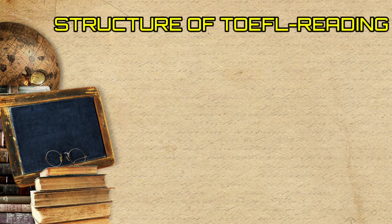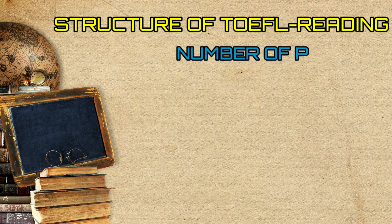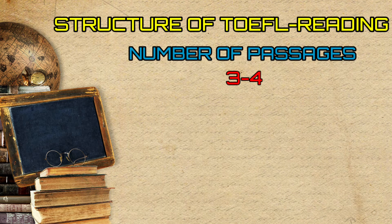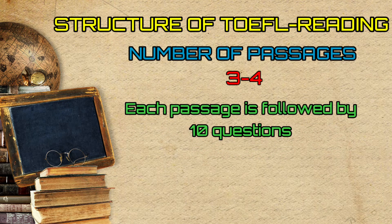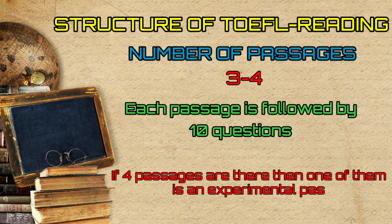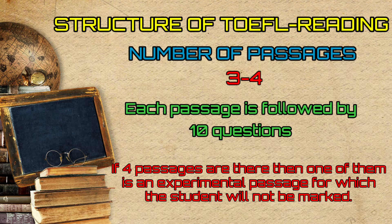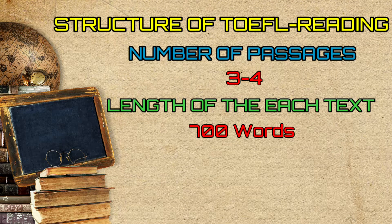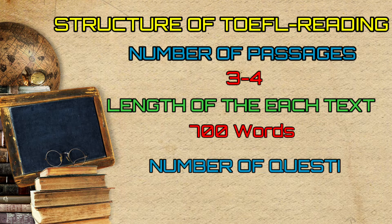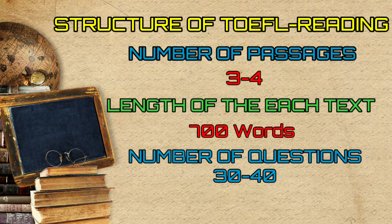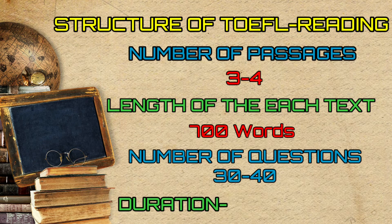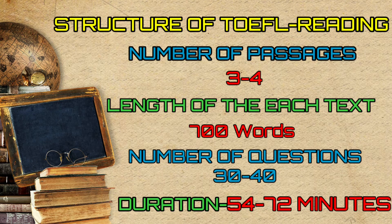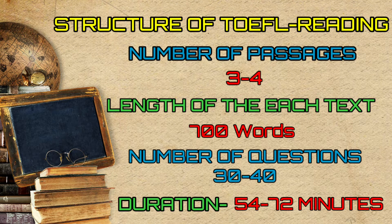Structure of TOEFL Reading section: The reading section comprises of three or four comprehension passages followed by a set of ten questions per passage. If four passages are there, then one of them is an experimental passage for which the student will not be marked. The length of each text is around 700 words; hence the number of questions varies between 30 to 40. Time allotted for answering the questions varies between 54 to 72 minutes depending upon the number of passages.